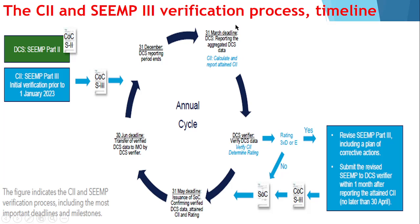The revised plan must mention the corrective action plan you are going to take to improve your CII rating. After monitoring emissions and annual fuel consumption from 1st January 2023 to 31st December 2023, you submit by 31st March 2024. Between the 31st March 2024 submission and before getting your SOC by 31st May 2024, if you have received an E rating or continuously 3 times a D rating, in that 2-month window you must submit a revised SEEMP corrective action plan. That needs to get approved, and after that only you will get a SOC based on your DCS data and attained CII rating. The administration will then forward the data to IMO.